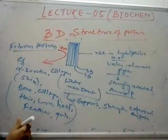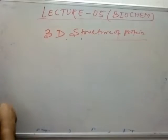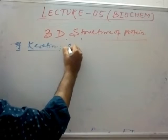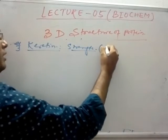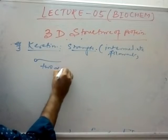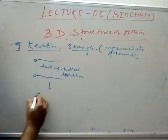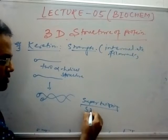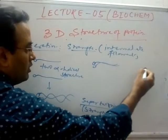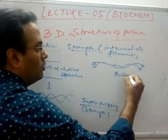The third example is silk fibroin. Let us take keratin as an example — keratin provides strength and is an intermediate filament. Keratin forms when two alpha-helical structures are super-twisted with each other. This super-twisting provides strength.